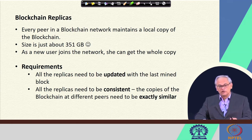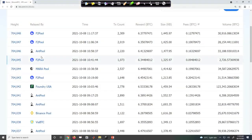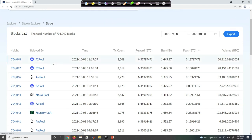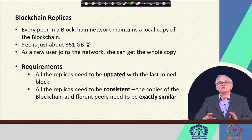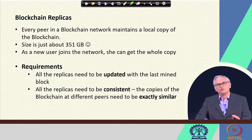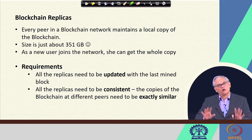All the replicas need to be updated with the last mined block. As new blocks get generated, they are visible in real time — for example on btc.com. If you view this lecture later, more blocks will have been added. Every peer node needs to have an identical and consistent copy, meaning all of them have the same information about the blockchain network.